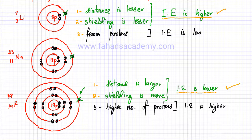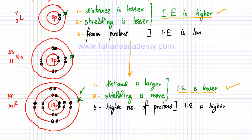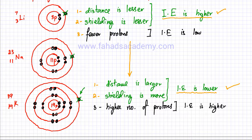So if you move down a group, the atom becomes bigger and bigger. Within a group in the periodic table, as you move down, atom size increases — atomic radius increases. As you move down a group the atoms become larger and larger, there's more shielding, so ionization energies become less and less. Ionization energy decreases down a group.